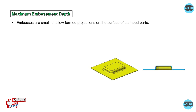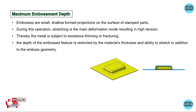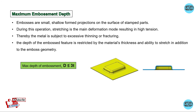Embossments are small, shallow-form projections on the surface of a stamped part. During this operation, stretching is the main deformation mode, resulting in high tension and subjecting the material to excessive thinning or fracturing. The depth of an embossed feature is restricted by material thickness and the ability to stretch. The maximum depth of embossment should be less than three times the material thickness.